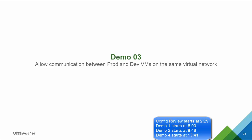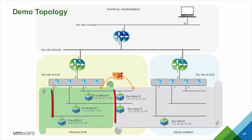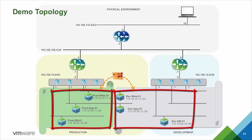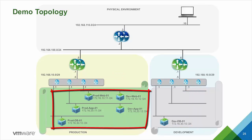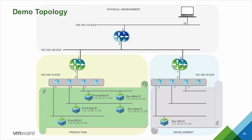In the third demo we are going to see how to change group membership to allow communication between production and development VMs that are on the same IP subnet and the same logical switch. We start with the same topology as demo 2, but we now move the development web and app VMs into the production group — without modifying IP addressing or switch membership — and we will see how easy it is and how that effectively changes the security policies that apply to these VMs.